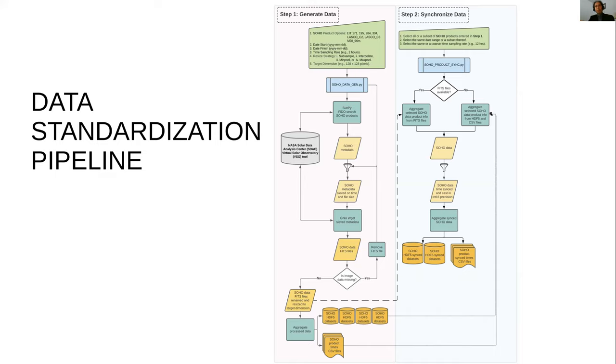This is fed into step two, which is a synchronization step. The user can select either a subset of the products initially chosen or all the products, and also the subset of the initial date range as well as either the same or a coarser time step. This second step synchronizes the data, providing again as outputs the HDF5 compressed files together with now a single list of timestamps because all the products are now synchronized to be at the same times. With this standardized dataset which is now cleaned and also temporally synced, this can be entered as inputs into a machine learning framework.